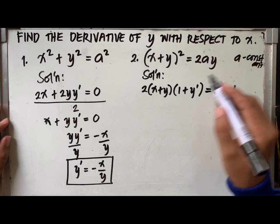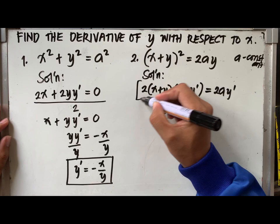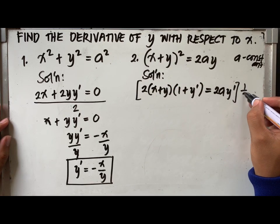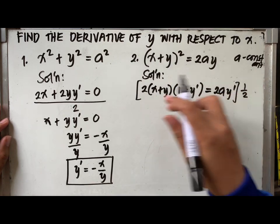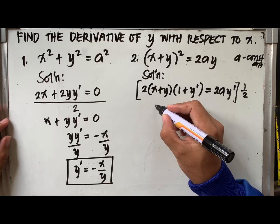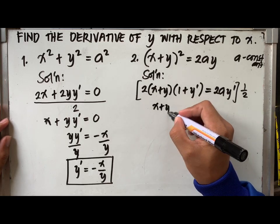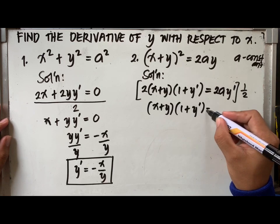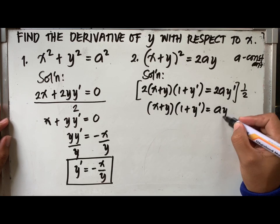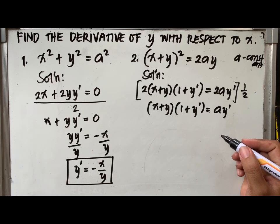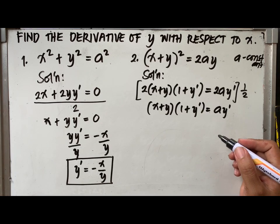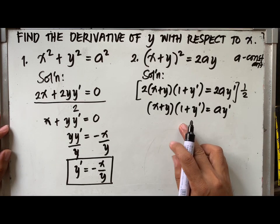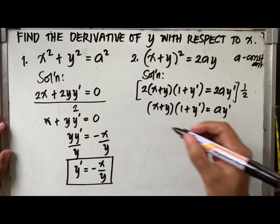Now, the next step will be, we simplify. We eliminate the grouping symbol, we combine like terms, and then we arrange the equation, solving for y prime. I just multiplied both sides of the equation by 1 half to eliminate 2, giving me x plus y times the quantity 1 plus y prime equal to a times y prime.